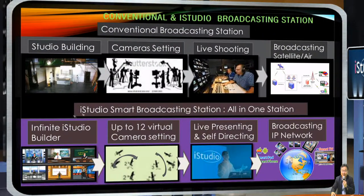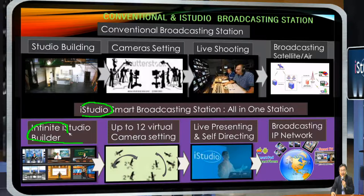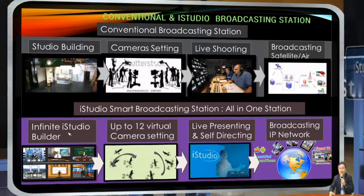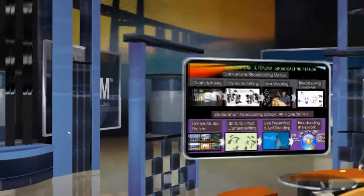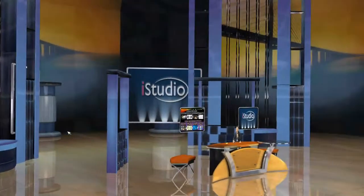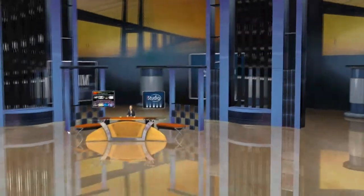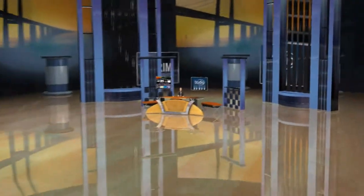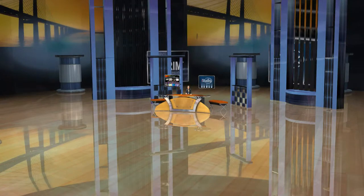What I invented in iStudio includes several different technologies for novice people. For example, infinite studio building — you can do this from the machine, which means you have a studio like that. But immediately, any novice person has the capability of changing the studio. For example, I can change the studio immediately, as I mentioned.